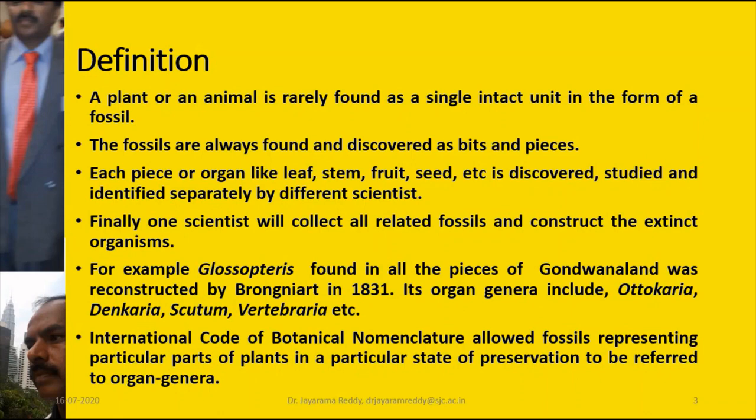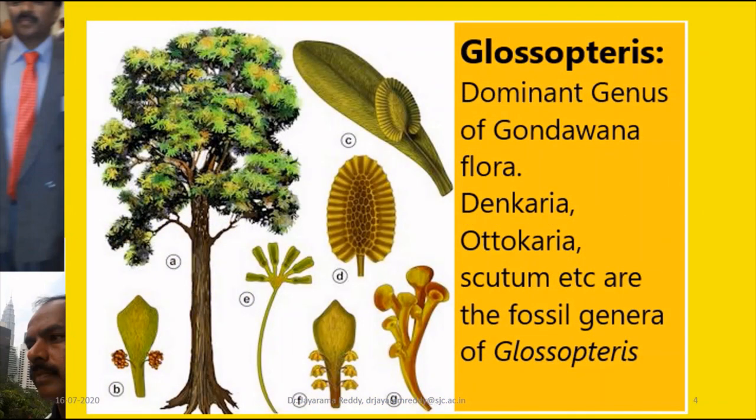The ICBN — International Code of Botanical Nomenclature — which governs the naming of plants, has allowed the naming of organ genera so that you can discover an individual organ and name it. Glossopteris is an example where you can see the different organs discovered by different people, and finally all of them are put together and the Glossopteris plant was reconstructed.